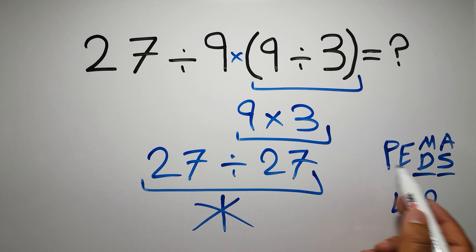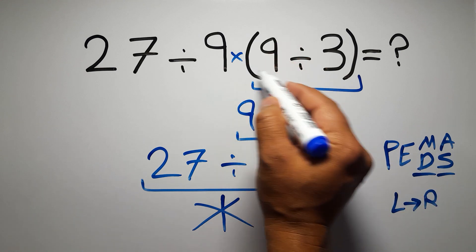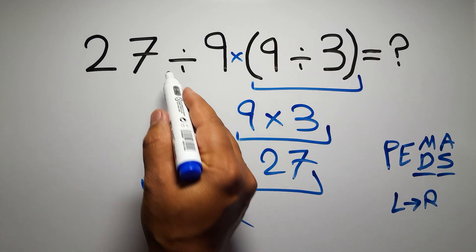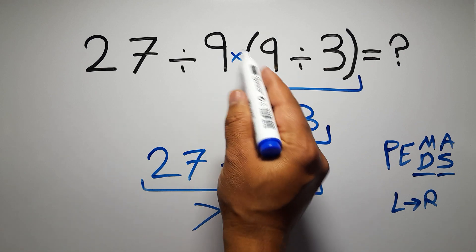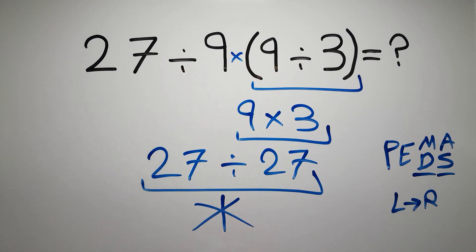So here, according to PEMDAS, first we have to do these parentheses, then this division, and finally this multiplication. If we do this multiplication before this division, it is wrong.